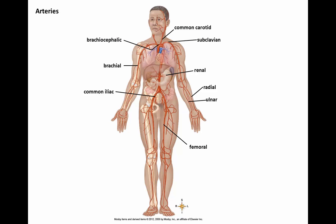Arteries to identify around the body include: the brachiocephalic, the brachial (where blood pressure is measured), the common iliac, common carotid, subclavian, renal, radial, ulnar, and femoral.